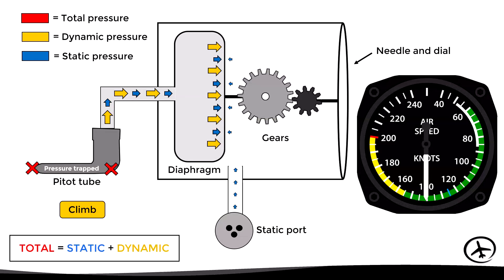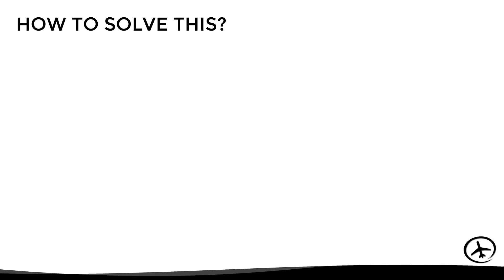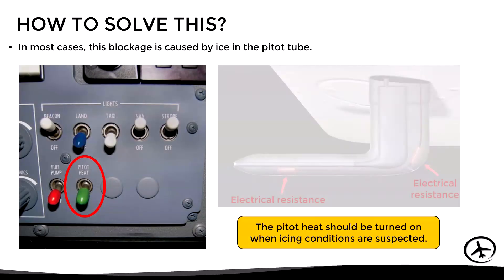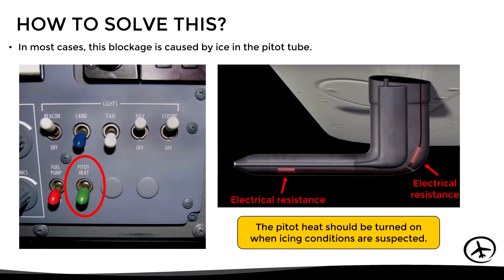This is why we say that with both holes blocked, the instrument acts as if it were an altimeter. Once a pitot blockage has been identified, the solution in most cases — since blockages commonly occur due to ice — is to activate the pitot heat in order to melt the accumulated ice.